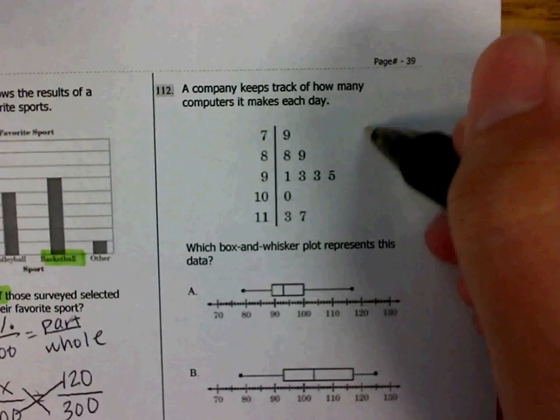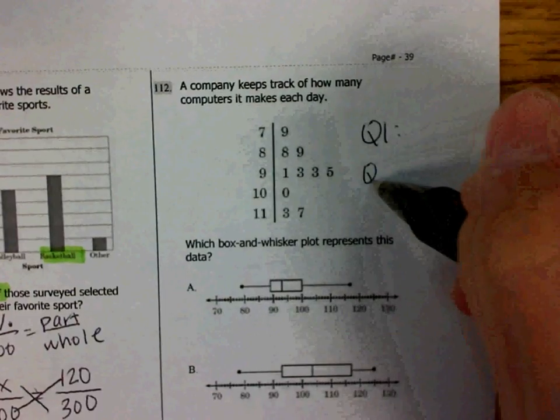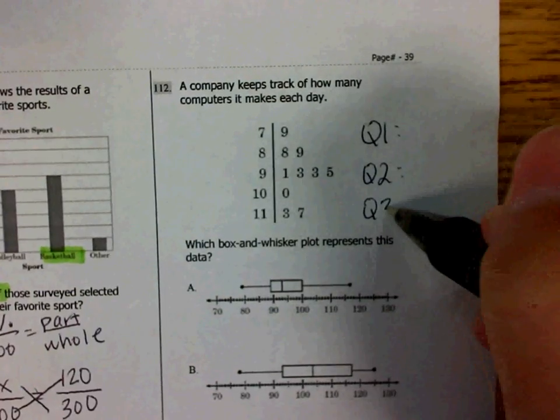Remember that with a box and whisker plot, you need quartile 1, quartile 2, and quartile 3.